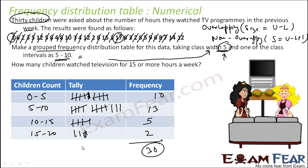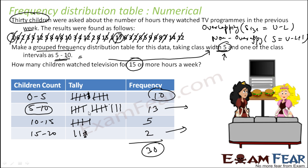From this we can see a lot of things. We can see that the maximum number of students watch 5 to 10 hours of TV. Students who watch television for more than 15 hours — there are 2 children. Children who watch for less than 5 hours are 10. Using this grouped table we can comment on the data easily.